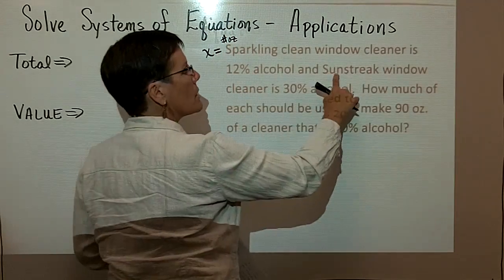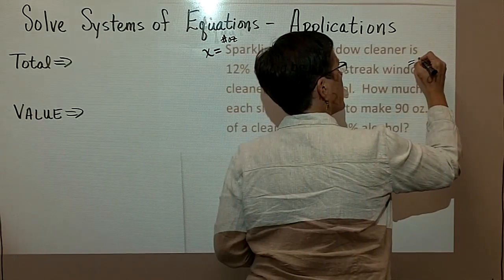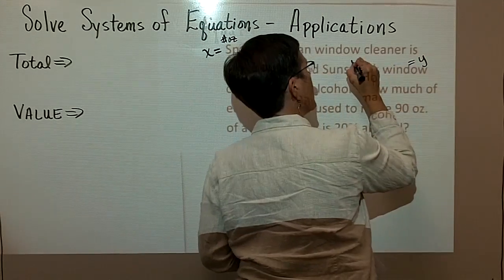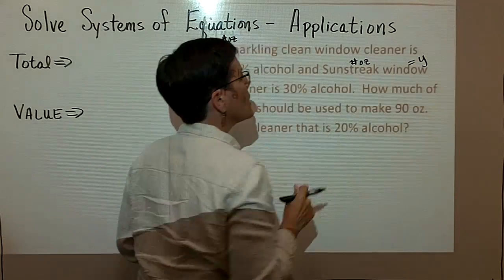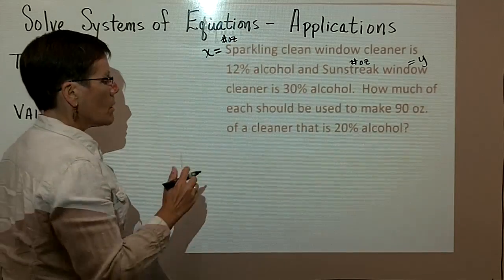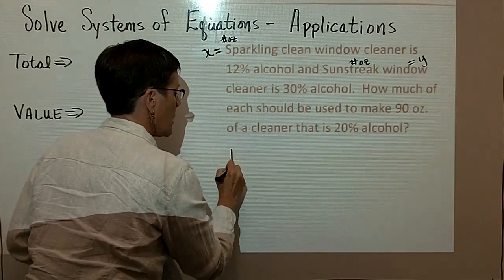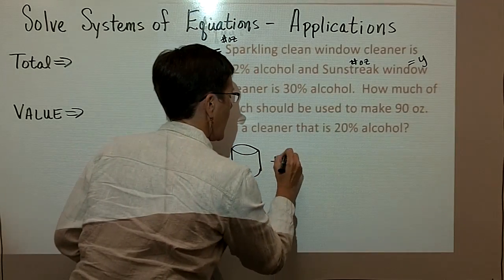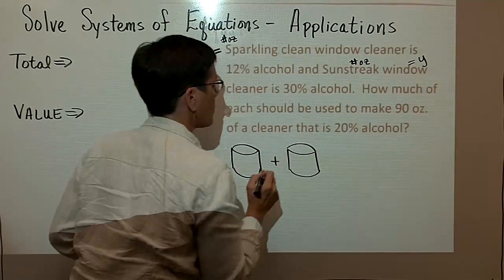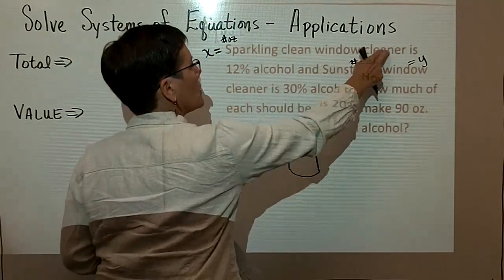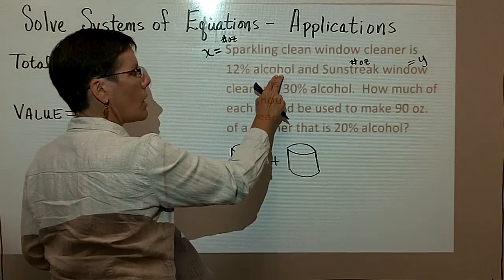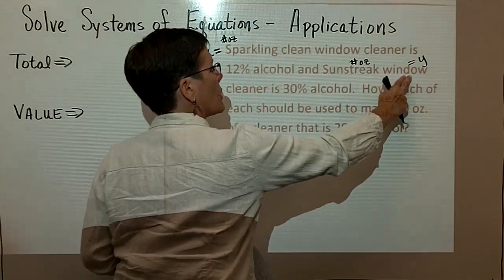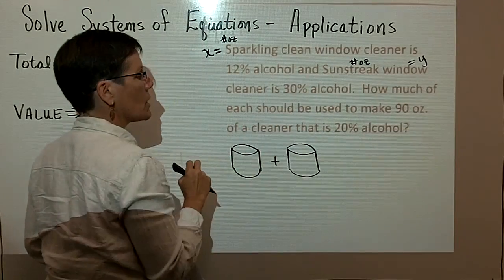And then I've got Sunstreak window cleaner, and I'm going to let that be the letter Y, the number of ounces of Sunstreak. But what I'd like you to see here in terms of these buckets is I want to take the two types of window cleaners. Sparkling Clean window cleaner, which is 12% alcohol, and Sunstreak window cleaner, which is 30% alcohol.